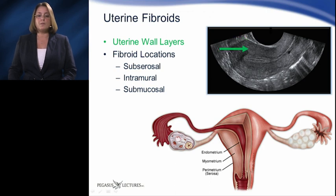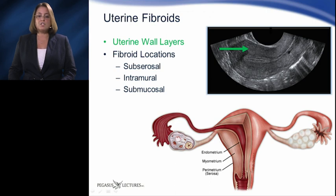The middle layer is called the myometrium. It is composed of smooth muscle and is responsible for expanding or stretching during pregnancy and the contractions that occur during labor.